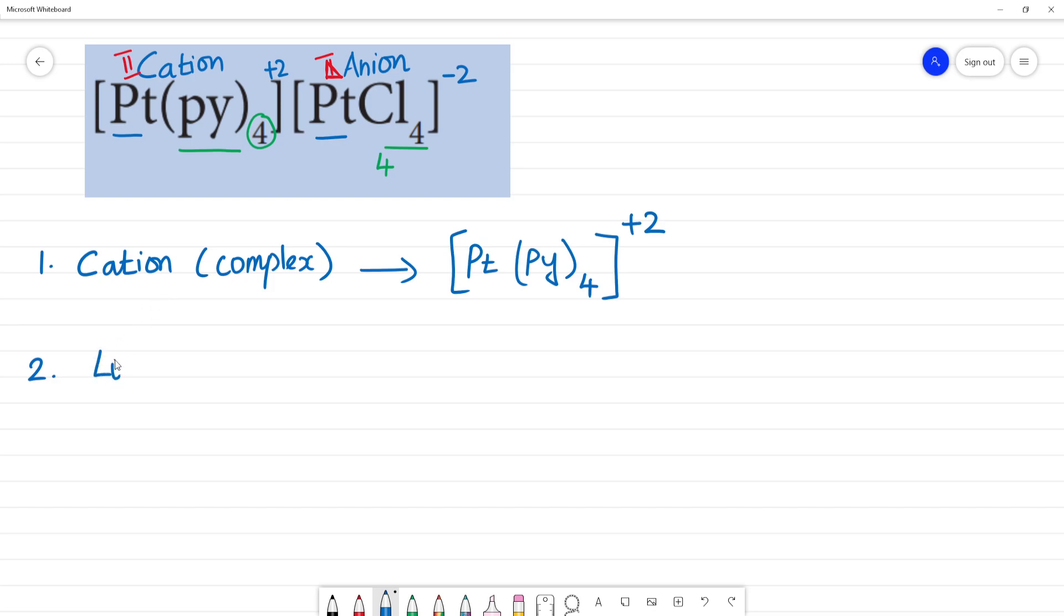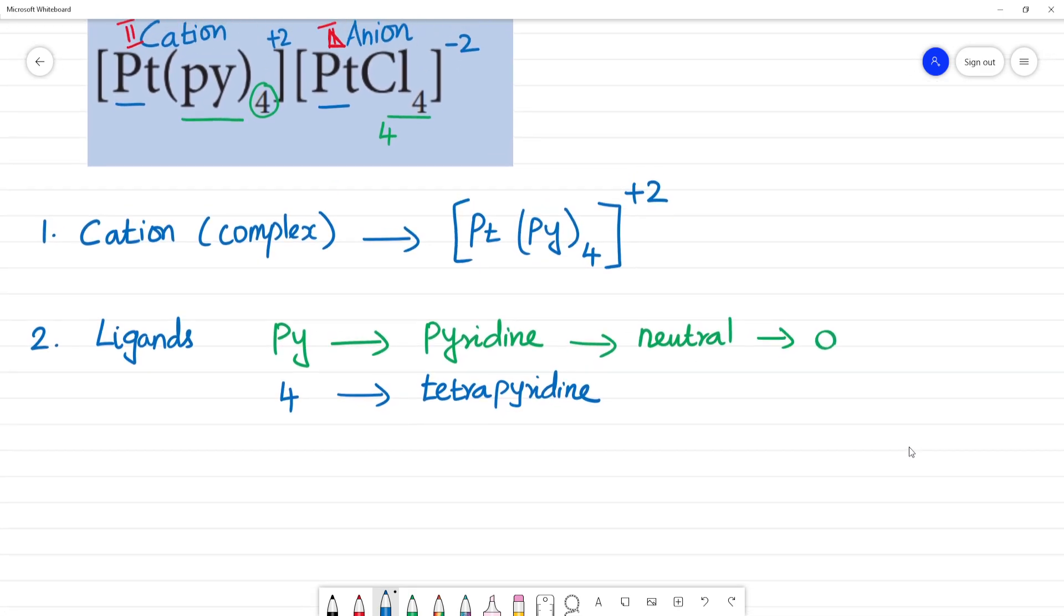Next, cationic complex - first we name the ligands. Py, pyridine, right? So we will name tetra, tetraperioden. This donating site has two donating sites, we call it amphedentate ligand, it is clear. If this name is tetraperioden.